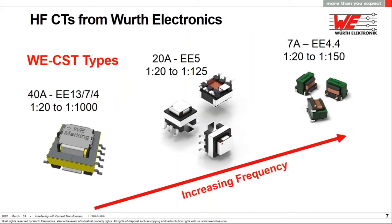Common applications for high frequency current transformers would include industrial controls, motor drives, power supplies, and SCADA systems, which is short for supervisory control and data acquisition. Würth Elektronik has three different sizes of current transformers designed for high frequency. All use EE ferrite cores in three different sizes, the EE-13, the EE-5, and the EE-4.4. The current handling capabilities range from 40 amps at the largest part down to 7 amps in the smallest part. All the parts are surface mount. The smaller the part, the higher the operating frequency, as I'll show you in a moment.